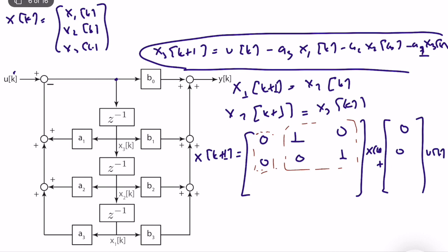The G matrix (state matrix) has the coefficient of x1 equal to −a3, −a2, −a1 in the bottom row, with zeros and an identity sub-block above. The H matrix (input matrix) is [0, 0, 1]^T. This is the control canonical form for any third-order system. The first column is always a zero column, next to it is an (n−1)×(n−1) identity matrix, and the bottom row always has the coefficients −a3, −a2, −a1. If you change the order of states, they will flip, but it still satisfies the control canonical form.